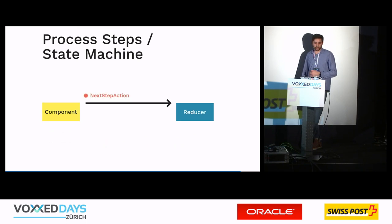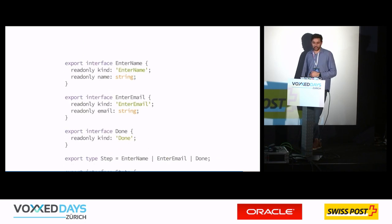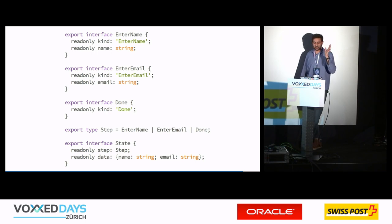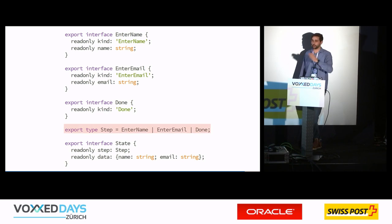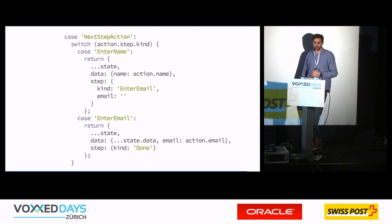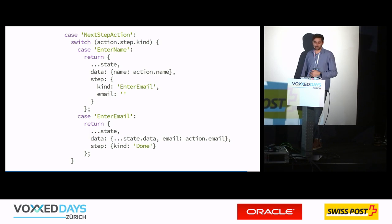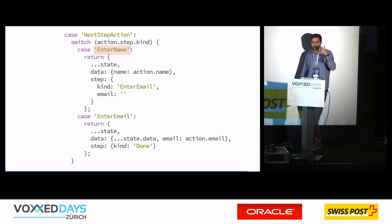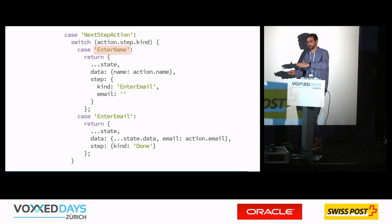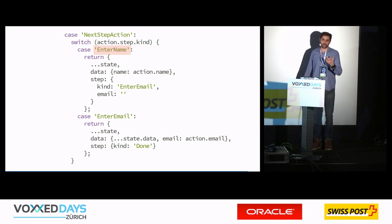There's also a process step pattern — kind of a finite state machine — where you use a step type interface with a union type, and jump from step to step in your state while collecting data along the way. You don't even need an effect for this; you handle it directly in the reducer with a nested switch inside the action type switch, switching on the action's step kind to decide whether to go to the next step, previous step, or other transitions.